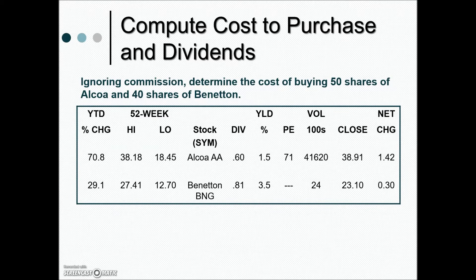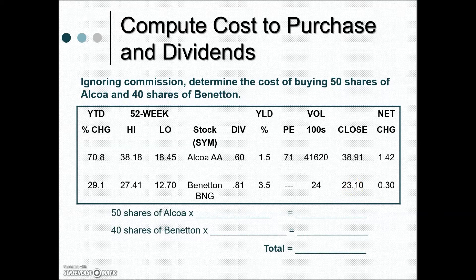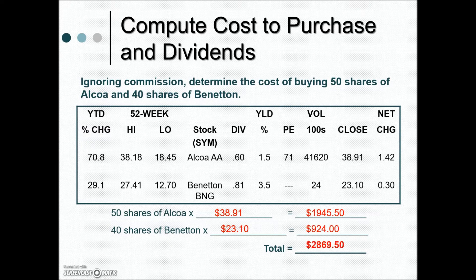Here we're asked to determine the cost of buying 50 shares of Alcoa and 40 shares of Benetton. The stock table shows the closing price so we can determine the cost per share. We take the number of shares purchased times the price per share at closing. For 40 shares of Benetton closing at $23.10, we multiply accordingly and add the two totals together to get the amount of money needed to purchase these stocks.